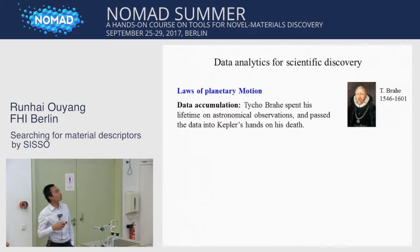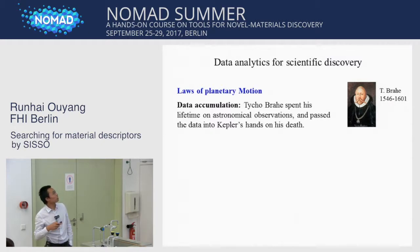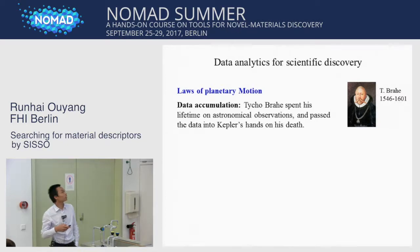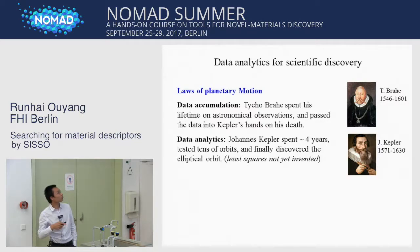Here is an example: the discovery of the law of planetary motion. We know that Tycho Brahe spent his lifetime on astronomical observation and passed his data into Kepler's hands on his desk. Then Kepler did the data analytics — he spent four years, tested types of orbits, and finally discovered the elliptical orbit.